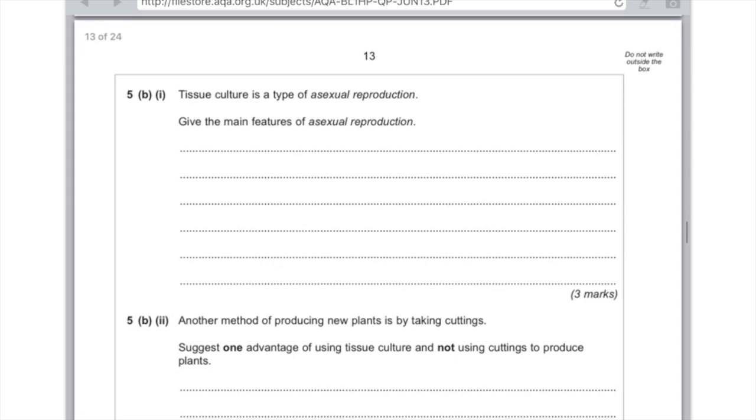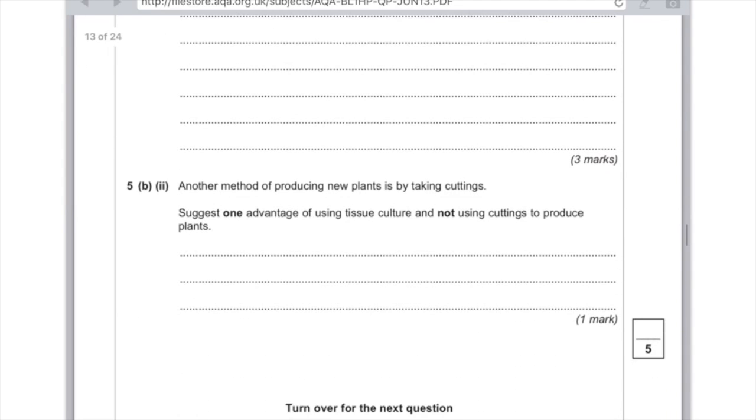5b part 2: Another method of producing new plants is by taking cuttings. Suggest one advantage of using tissue culture and not using cuttings to produce plants. There's just one thing really here to mention, which is that tissue culture can result in thousands of plants being produced from a single plant and it's super quick in comparison to using a cutting.